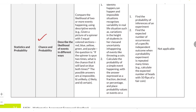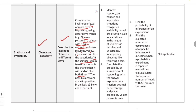Under chance and probability, you need to describe the likelihood of events in different ways and compare the likelihood of two or more events using descriptive words. For example, given a spinner with five equal colored sections — red, blue, yellow, green, and purple — the question might be: if the spinner is spun two times, what is the chance that it will land on blue both times? You should also identify events as certain, possible, or impossible; recognize variability in real-life situations; calculate the probability of a simple event expressed as a fraction, decimal, or percentage; find the probability of inference; and find the expected number of occurrences.